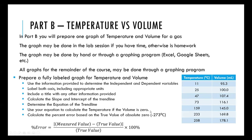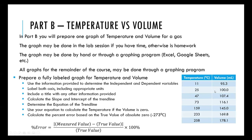You're going to calculate the percent error based on the true value. The percent error is the absolute value of your measured number minus the true value, divided by the correct value. In this case, the correct value is −273 degrees Celsius. So you'll prepare the graph, use the trend line to calculate what temperature corresponds to zero volume, and then calculate the percent error.